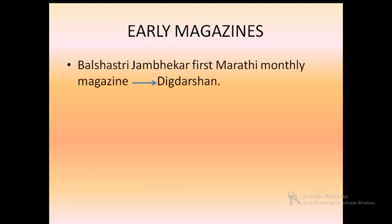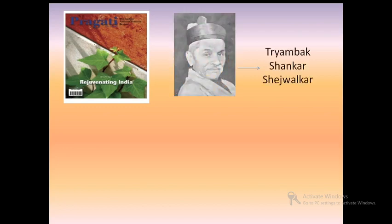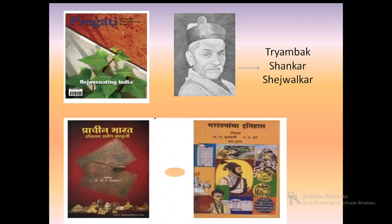About early magazines: Baal Shastri Jambhekar started the first monthly magazine in Marathi, known as Digdarshan. Pragati was a now defunct journal — defunct means no longer existing — started by Triambak Shankar Sheswalkar in the year 1929. Marathi journals like Bhartiya Itihas ani Sanskruti and Marathwada Itihas Parishat Patrika were periodicals devoted to Indian history.